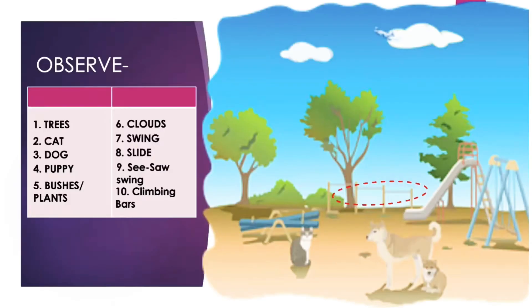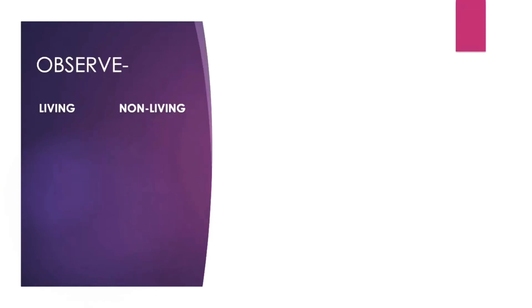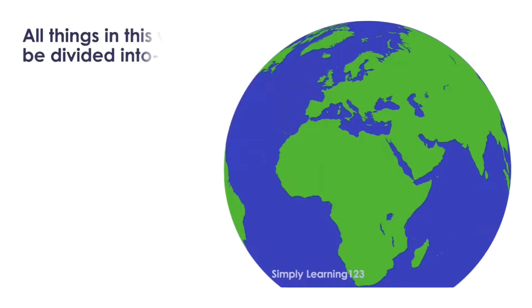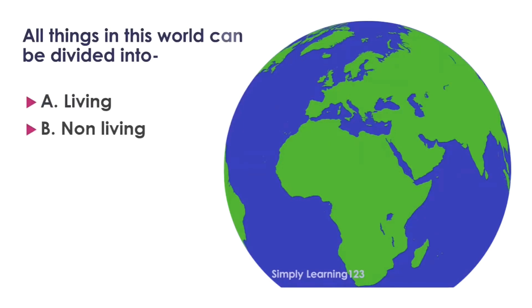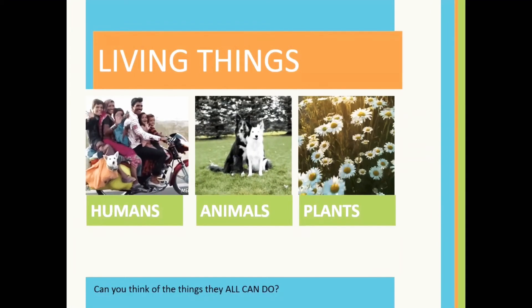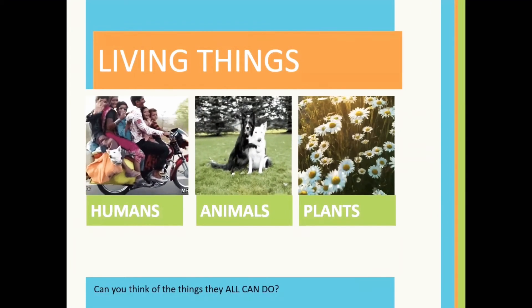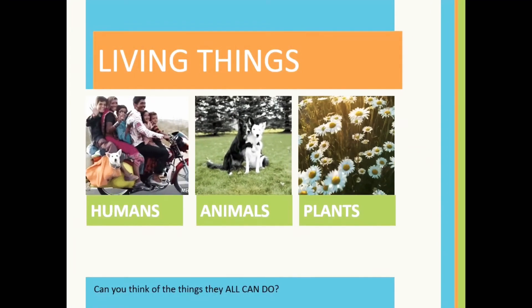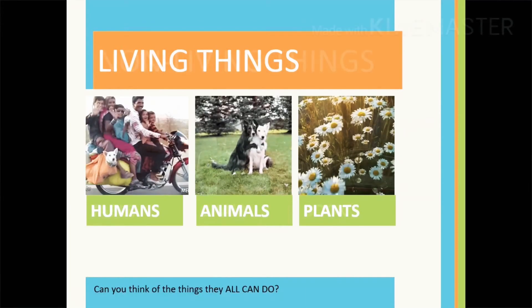By the end you will be able to sort these things into living and non-living things. All things in this world can be divided into two groups: living and non-living. Humans or people like us, animals, and plants are all living things because they have life in them.